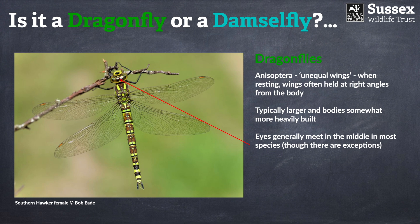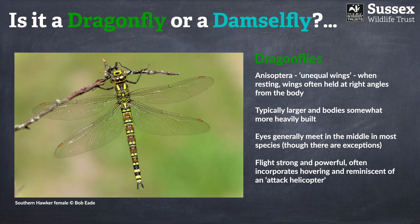Dragonflies' eyes as a general rule almost always meet in the middle — although there are exceptions, such as the common club tail, whose eyes are actually spaced fairly widely apart. Perhaps the most distinctive characteristic about dragonflies is their flight; it is incredibly distinctive. They're very powerful flyers and often incorporate a lot of hovering, although this is rather dependent on the species. You'll often see them whizzing around very quickly, and their stance is somewhat reminiscent of an attack helicopter. They really are fascinating to watch.